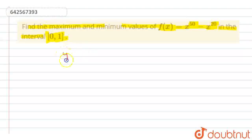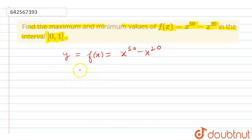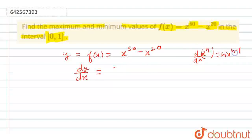We have the function, let us suppose it is equal to y, which is equal to x raised to the power 50 minus x raised to the power 20. We will find dy/dx. We know that the differentiation of x raised to the power n is nx to the power n−1, so we have dy/dx equal to 50x raised to the power 49 minus 20x raised to the power 19.